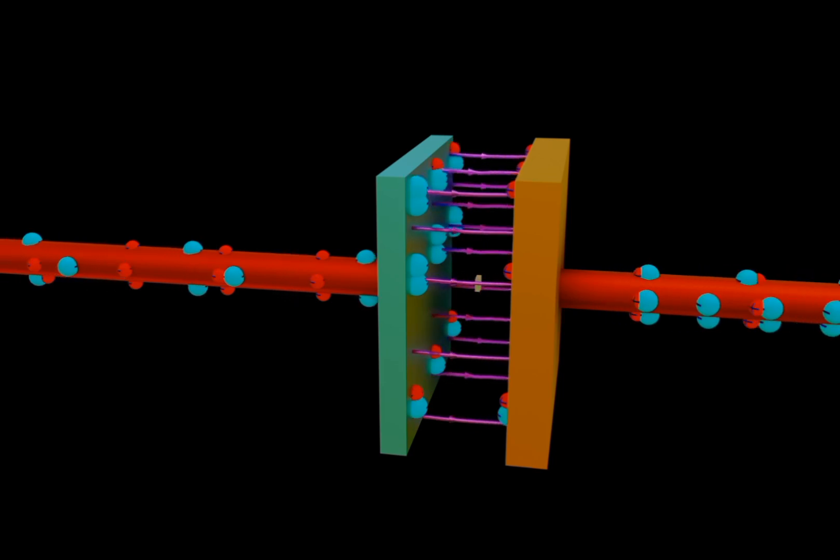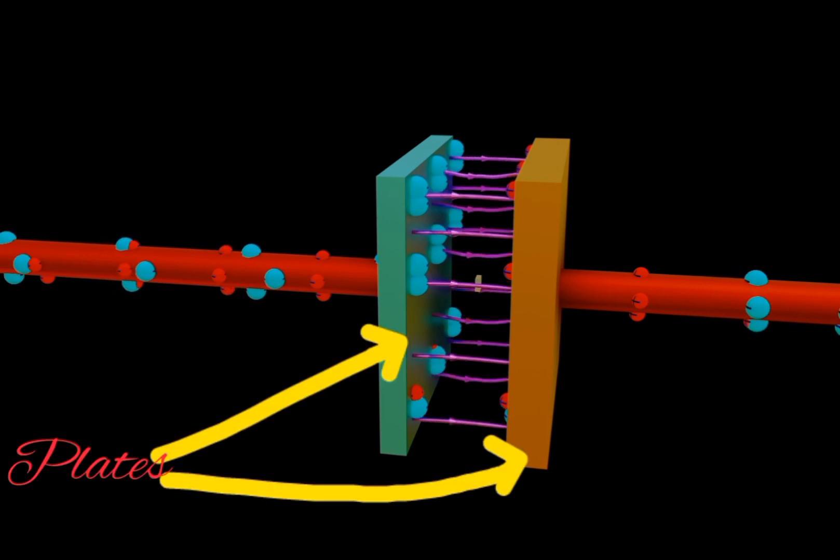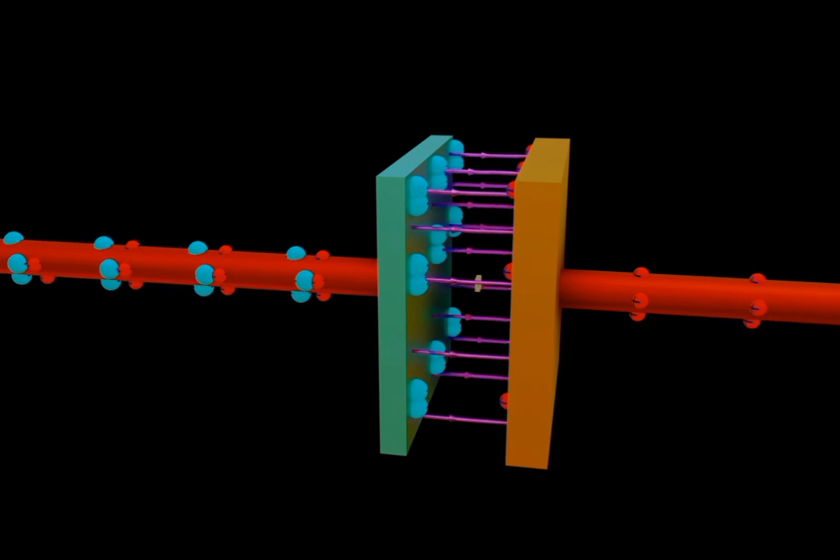First, as said before, a capacitor is made of two conductive plates and a dielectric material which is placed in between the plates and is non-conductive.